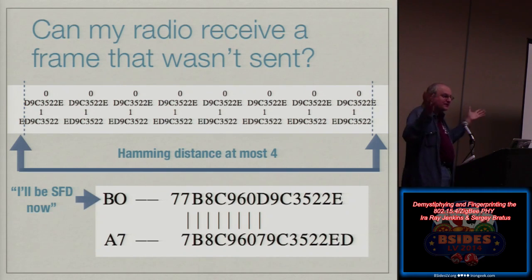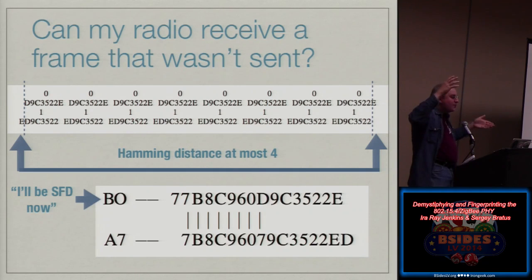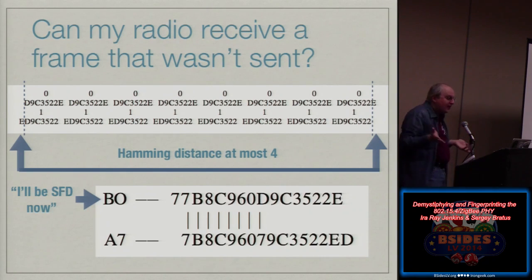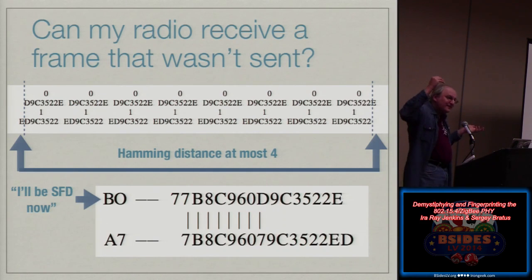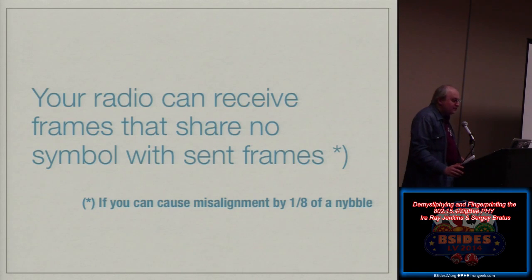You have this illusion of the PHY layer as taking a frame, transmitting a frame, and getting back a frame. You expect to get the frame that was sent, or to not get it because it was damaged by noise. Nowhere in your threat model is the idea that you could be getting a completely different valid frame than the one that was transmitted. Yet the magic of PHY makes this possible — you can actually receive frames that share no symbol with the sent frame.